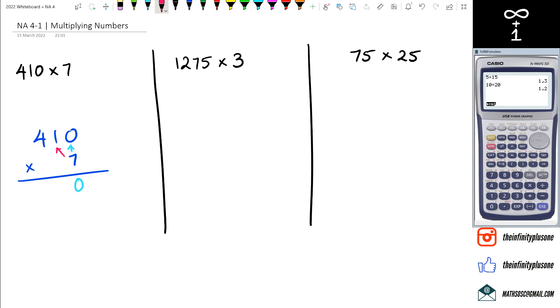Then I've got 7 times 1. Notice I'm actually writing underneath the particular numbers that I'm actually multiplying by. So when I do 7 times 1, I'm actually writing the 7 underneath the 1. And then finally I've got 7 times 4, which actually equals 28. So my first answer that I've got here, 410 times 7, is 2870.